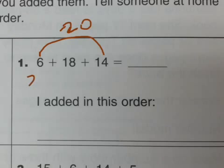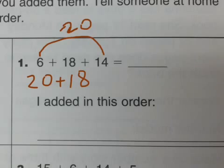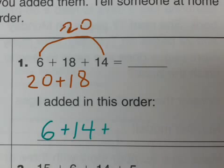Then I can do 20 plus 18, and I have my final answer, which you can calculate. At the bottom, just write the order that you added them. So I did 6 plus 14 first, and then I added the 18.